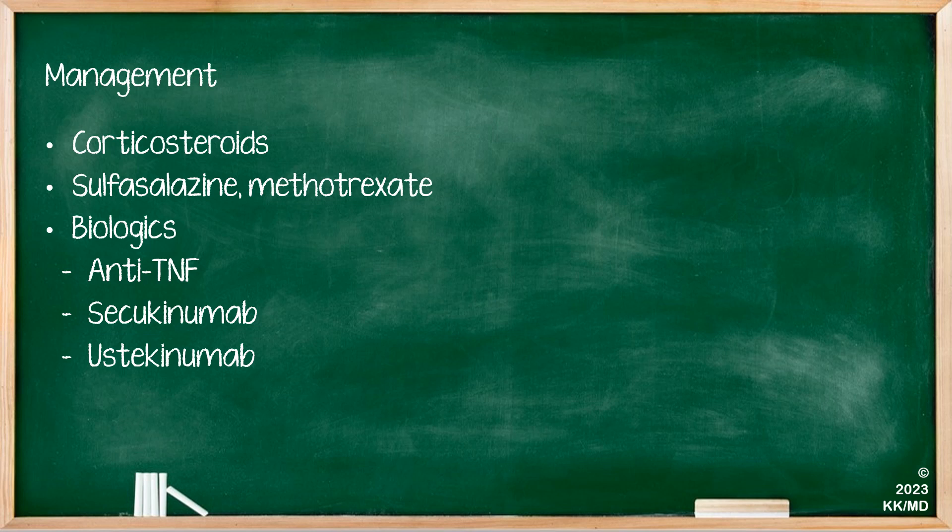The management of enteropathic arthritis really starts with steroids, which can help with both bowel and arthritis symptoms. We then move on to conventional DMARDs, which can include sulfasalazine or methotrexate. Sulfasalazine may also be used for bowel symptoms, whereas methotrexate tends not to be. In terms of biologics, these patients may have anti-TNF drugs, secukinumab, or ustekinumab. Secukinumab is an IL-17 inhibitor and ustekinumab is an IL-12/23 inhibitor.